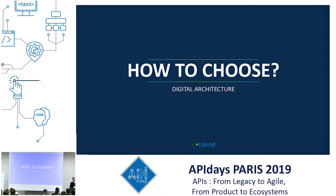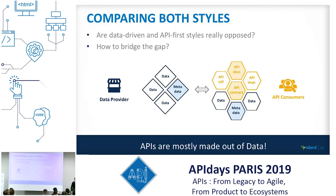So now, how do you choose? How do you really solve these challenges and build a comprehensive, solid digital architecture? On the left you have the data provider and all your data assets you want to value; on the right you have API consumers close to the digital experiences. Are these two styles really opposed — data-driven vs. API-first — or could they be combined? Could we bridge the gap between these two approaches, two ecosystems, two types of teams? If we put them together, we see they have a lot of common pieces. They are complementary more than opposed, but yet it's a challenge to make them work well together.